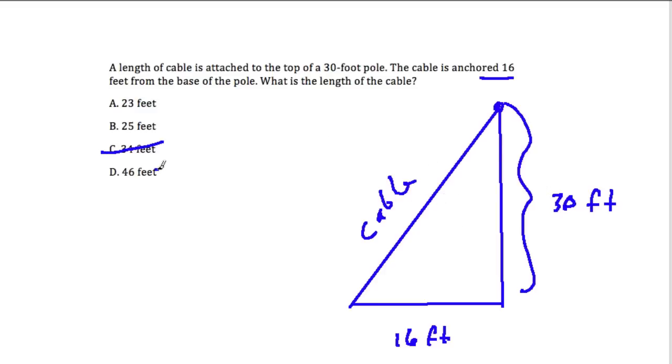And here is interesting because we know this cable has to be longer than the pole. So automatically, C and D are out. Wait, think of that the opposite way. If the cable is longer than the pole, it can't be 23 or 25 feet. It's got to be bigger than 30 feet.